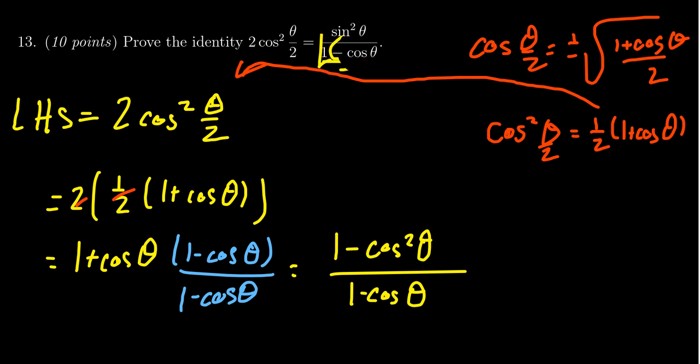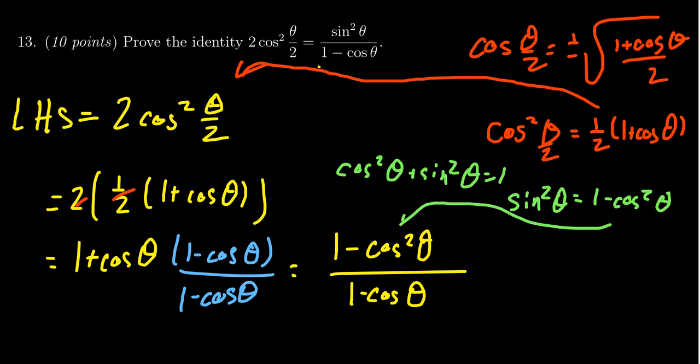For the numerator, 1 - cos²θ has quadratic terms, which makes me think about the Pythagorean relationship. Recall that cos²θ + sin²θ = 1, so sin²θ = 1 - cos²θ. That's exactly what we're looking for. We end up with sin²θ/(1 - cosθ).